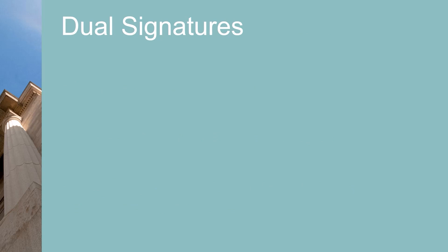Requiring two signatures for checks over a certain dollar amount is a control that's been around for a long time. Unfortunately, it's a very weak control. It's effective when the second signer catches a mistake in the amount or payee for a check.